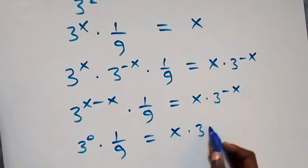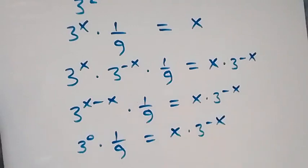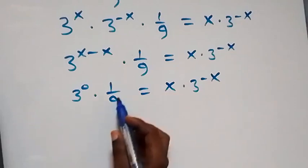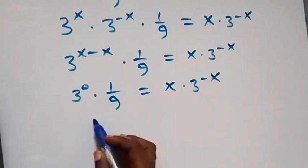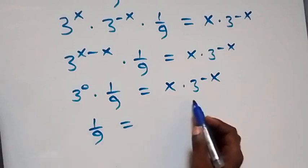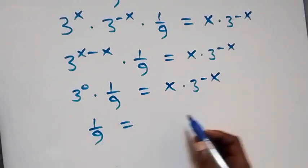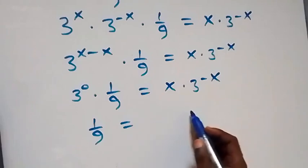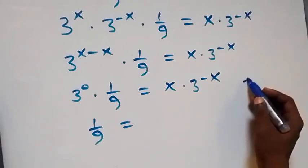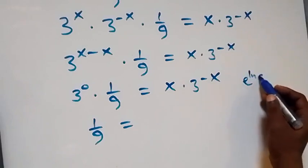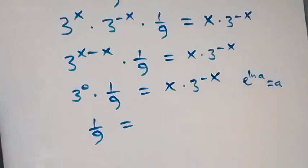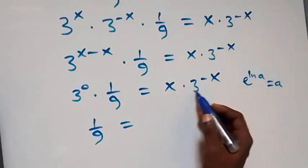3 raised to power 0 is 1, so we have 1 times 1 over 9, which is still 1 over 9, now equals x times 3 raised to power minus x. Now let's rewrite this — using the identity e raised to power ln a equals a, we can write 3 as e raised to power ln 3.